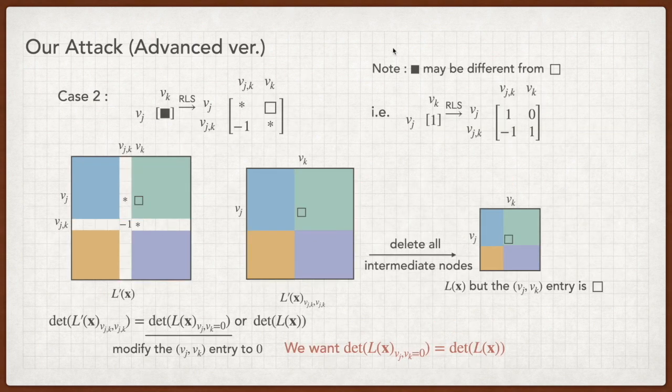However, RLS introduces additional nodes, which means additional minors. The second case is minor associated with two repeated intermediate nodes. This case is a little bit different as computing the minor is equal to deleting the intermediate node without recovering the value of VJK entry. Notice that the entry of VJK may be changed from 1 to 0 by the RLS. Thus, the minor is equal to either the left term or the right term. In the left side, the entry of VJK is changed to 0, while in the right side, the entry of VJK remains unchanged. To kill the uncertainty, we want the equality of these two terms.